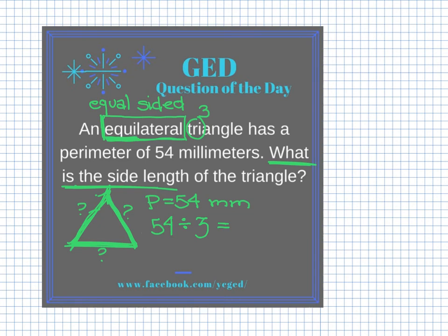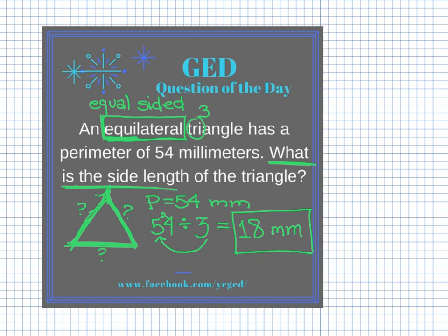I'm going to do 54 divided by 3. Using short division: 3 goes into 5 once with a remainder of 2, and 3 goes into 24 eight times. So each side has to be 18 millimeters long. The answer is 18 millimeters. If you have any questions about this problem, be sure to drop them in the comments.